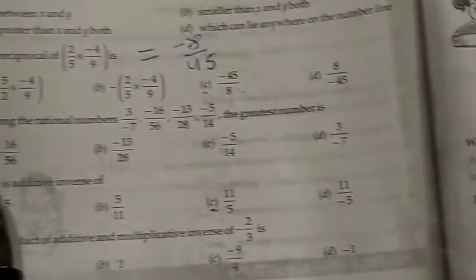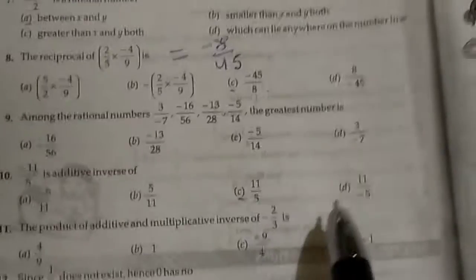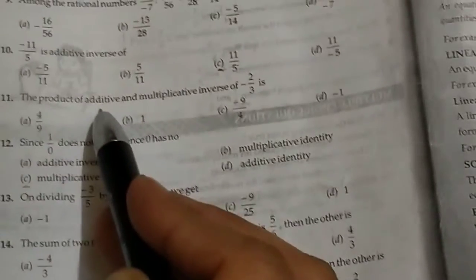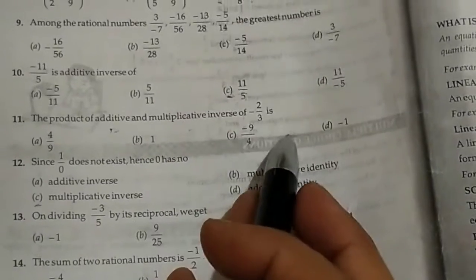Next one is what is the additive inverse of this? So eleven by five is additive inverse. In question number eleven, the product of additive inverse and multiplicative inverse of this, additive inverse is two by three.